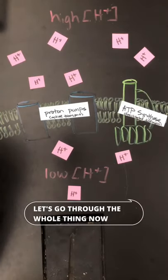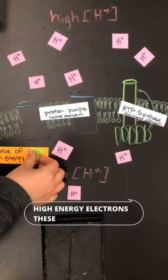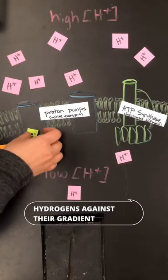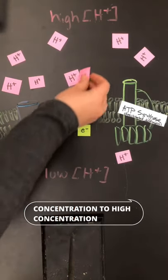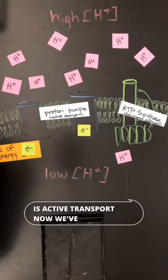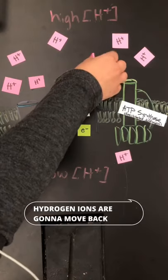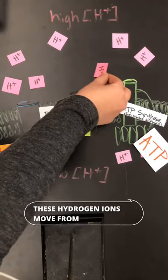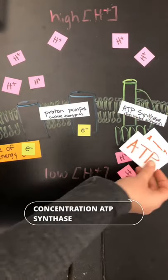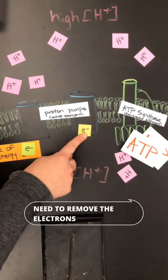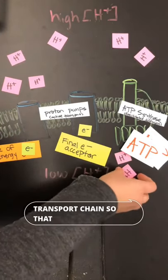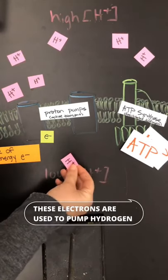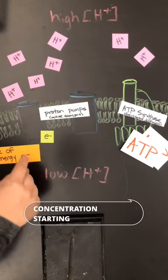Let's go through the whole thing now. It starts with a source of high energy electrons. These donate electrons to the proton pumps, which powers the pumps so they can move hydrogens against their gradient. These hydrogens are moving from low concentration to high concentration, which is active transport. Now we've made a really large concentration gradient, so these hydrogen ions are going to move back down their gradient through ATP synthase, which makes ATP. Finally, we need to remove the electrons from the transport chain so that more room can be made for additional electrons to come in. And these electrons are used to pump hydrogen ions from low to high concentration, starting the cycle all over again.